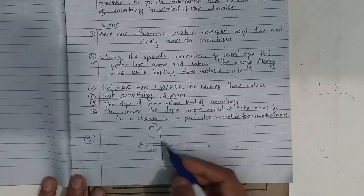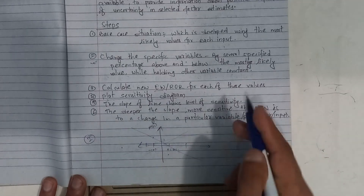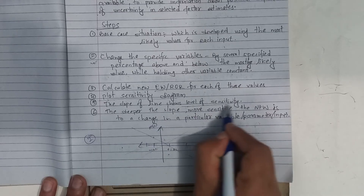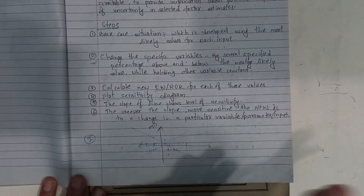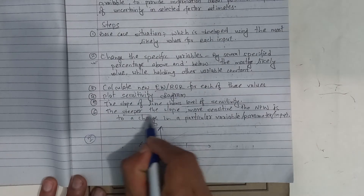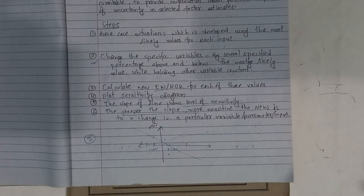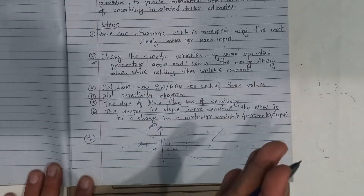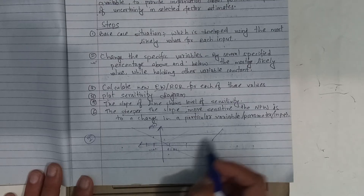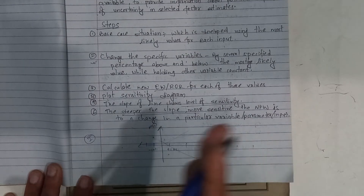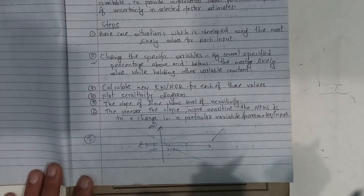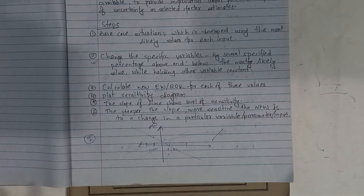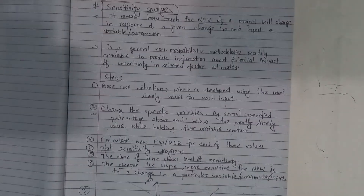We calculate a new equivalent worth or rate of return for each of these values. Then we plot a sensitivity diagram — a simple graphical notation where we show PW on the y-axis and percentage change (e.g., −10% to +10%) on the x-axis. The slope of the line shows the level of sensitivity: a steeper slope means the net present worth is more sensitive to a change in that particular variable.